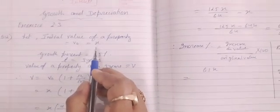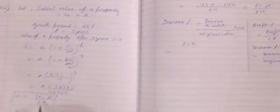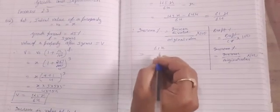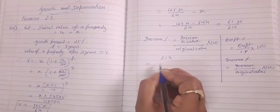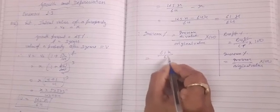But now its value increased by this much, and it became 125x/64. So I hope now your calculation is correct. I'm putting the value: 61x/64 divided by original value that was x times 100.